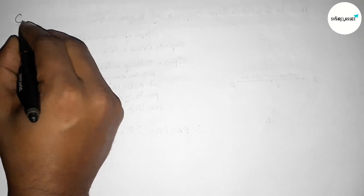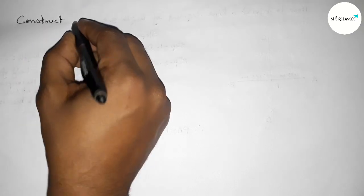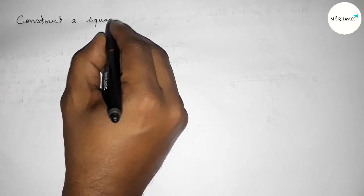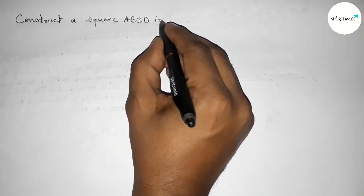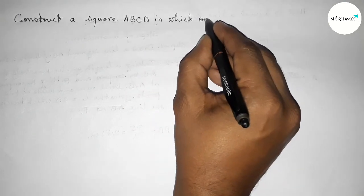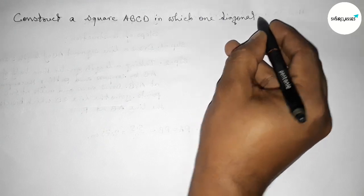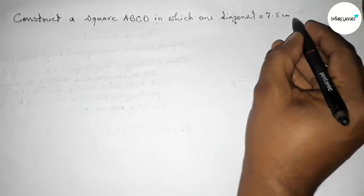Hi everyone, welcome to SIC Share Classes. Today in this video I am going to solve an important construction: we have to construct a square ABCD in which one diagonal equals 7.5 centimeters.